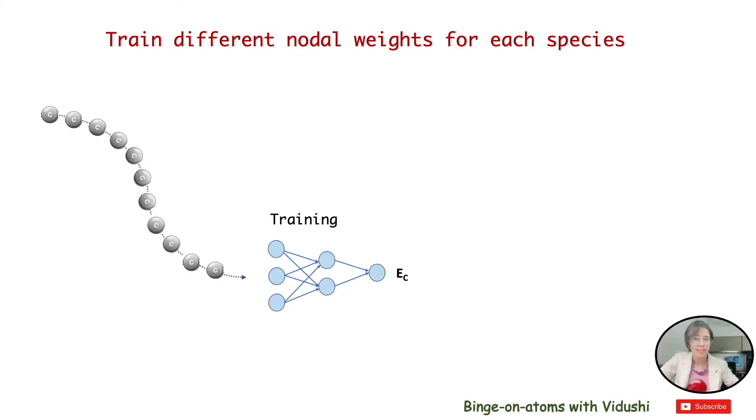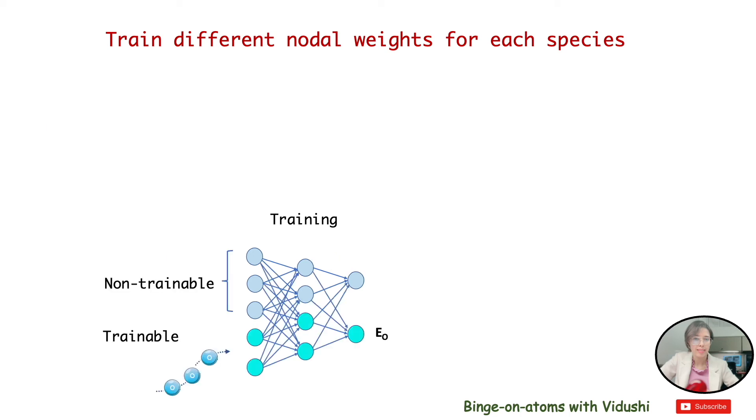Coming back to the third approach, this is not very popular yet but is reported to reduce the simulation time. In the third approach, rather than training entire species-specific neural networks, you can train a few nodes for a single species and then freeze those nodal weights as non-trainable and add new trainable weights for another species.